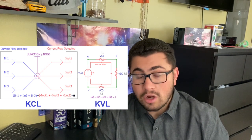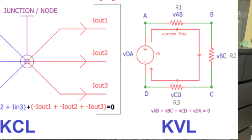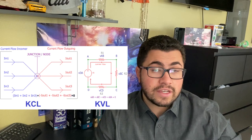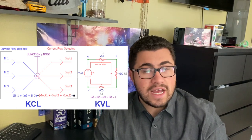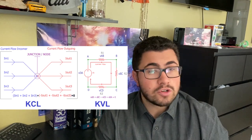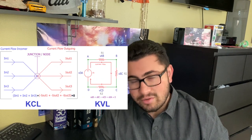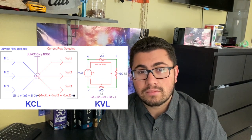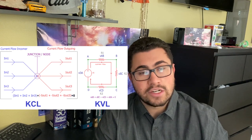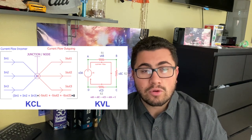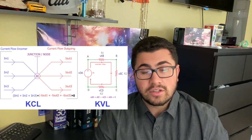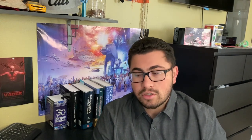We also have Kirchhoff's voltage law, which basically means that around a loop, the sum of all things providing voltage and the things consuming voltage has to equal zero. So if there are two batteries linked together, it increases the voltage around that loop. Whenever you have a potential difference across another portion of the circuit, it causes a reduction in total voltage until it reaches zero back at where the battery starts.